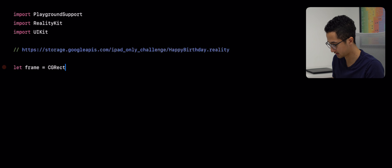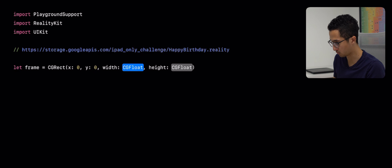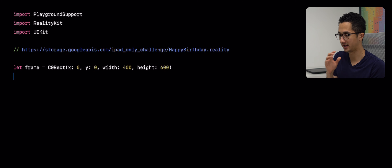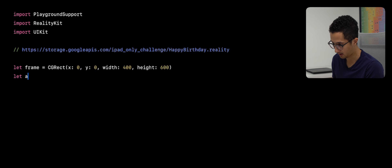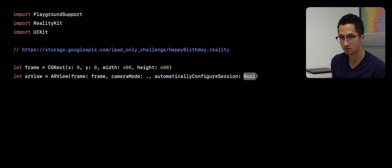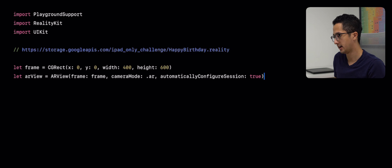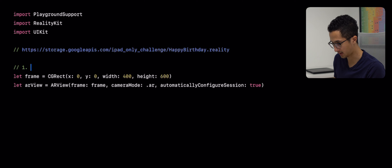What we're first gonna do is create an AR view because we have to set the view in the Playground. We're gonna create a frame for the AR view, which is a CGRect - I need to import UIKit too. We need a CGRect using the constructor with X, Y origin and then width of 400 and height of 600. This is essentially the frame for the AR view. Now we're gonna create the AR view using the ARView constructor with our frame.